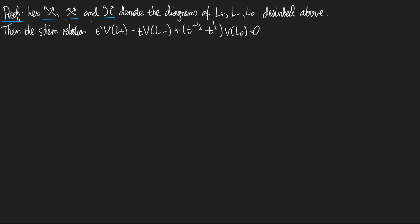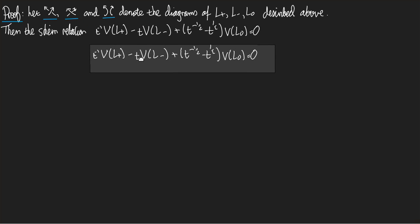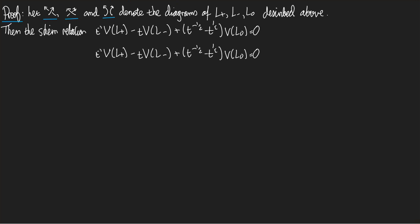The skein relation is this equation here. Let's reinterpret it by using the definition of the Jones polynomial. The skein relation becomes an expression where we substitute in the definition of the Jones polynomial for each term. So we have to replace V(L+) with minus a to the minus three times the writhe of that diagram, times the Kauffman bracket of that diagram — and that was T-inverse times this.